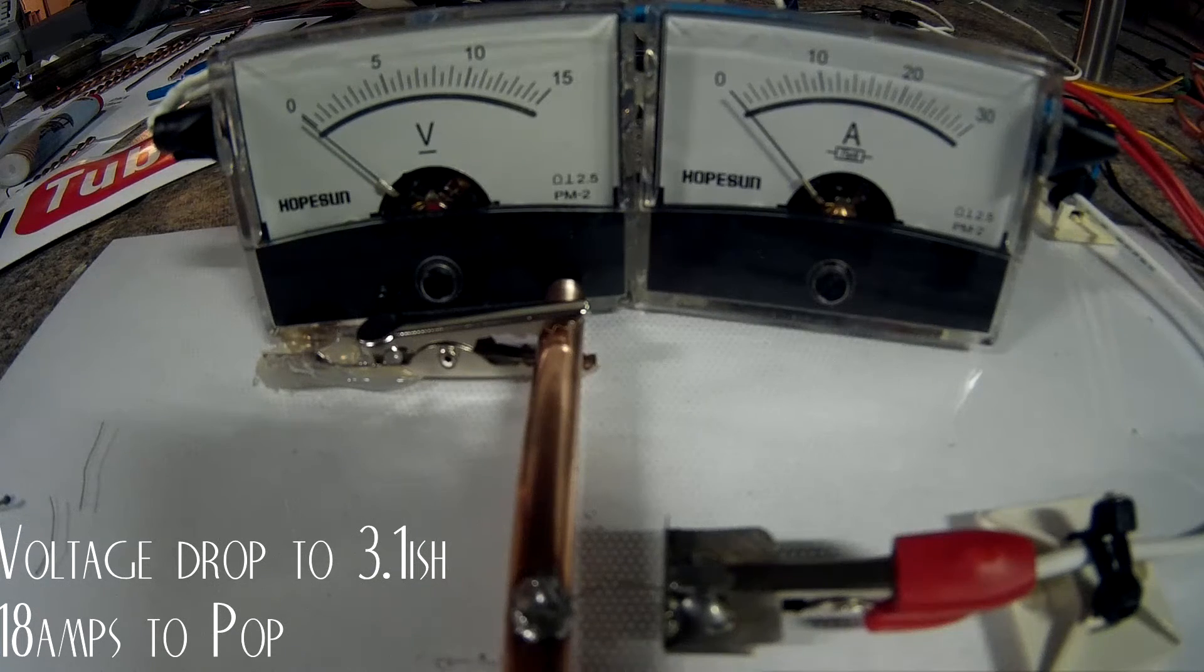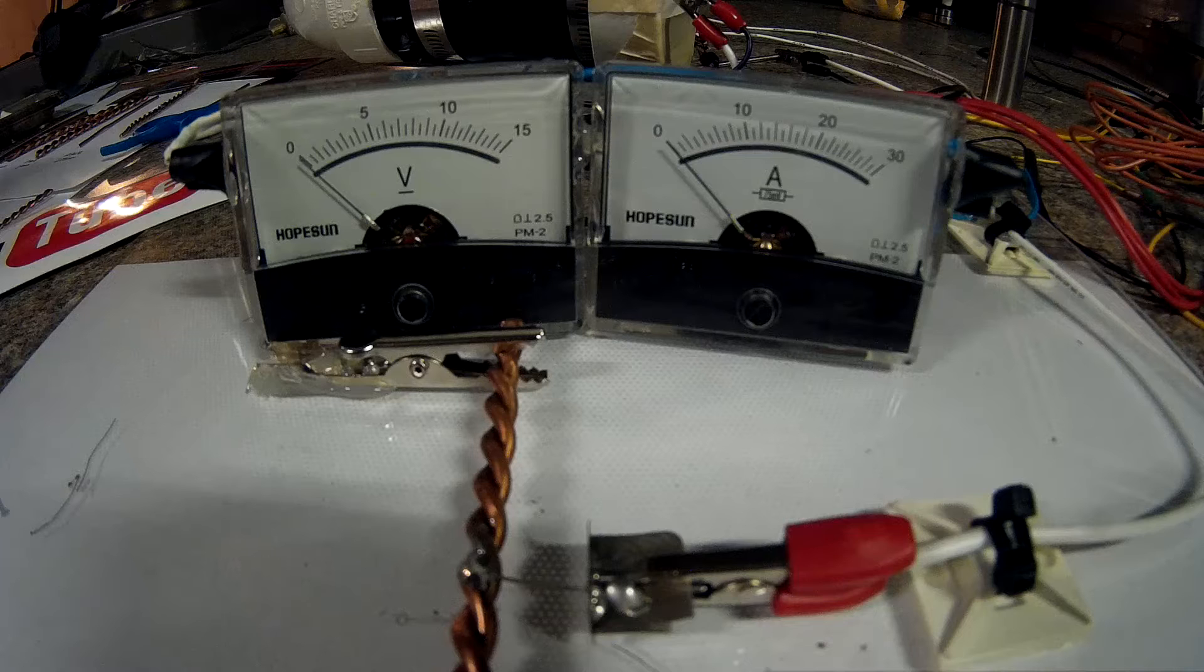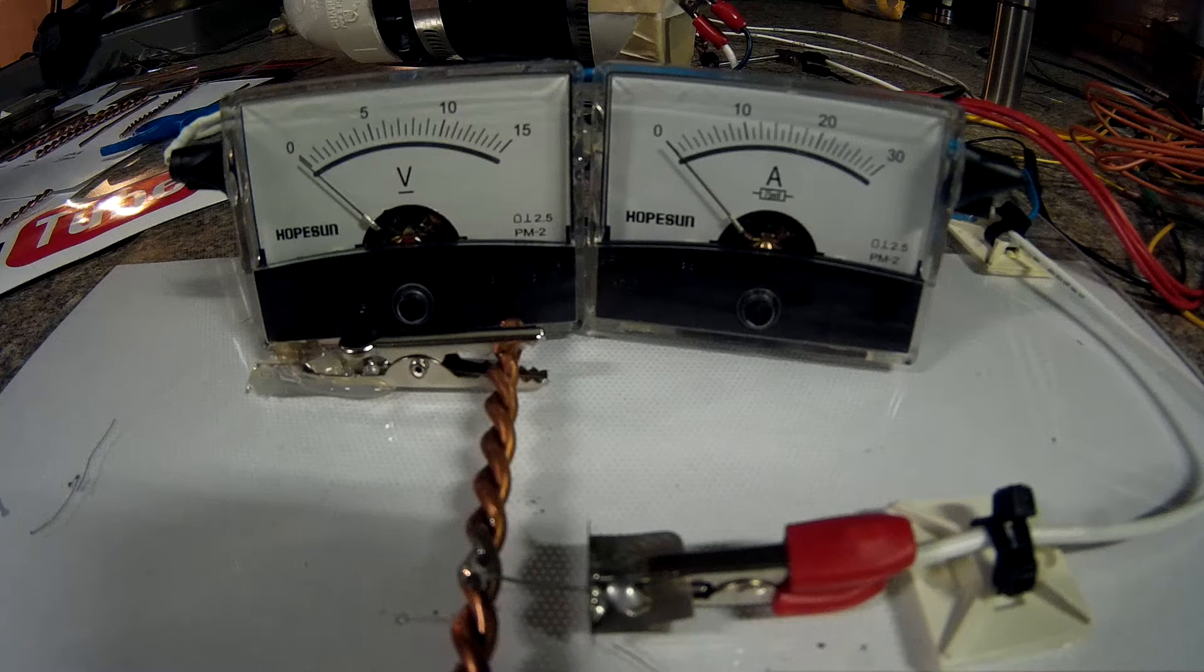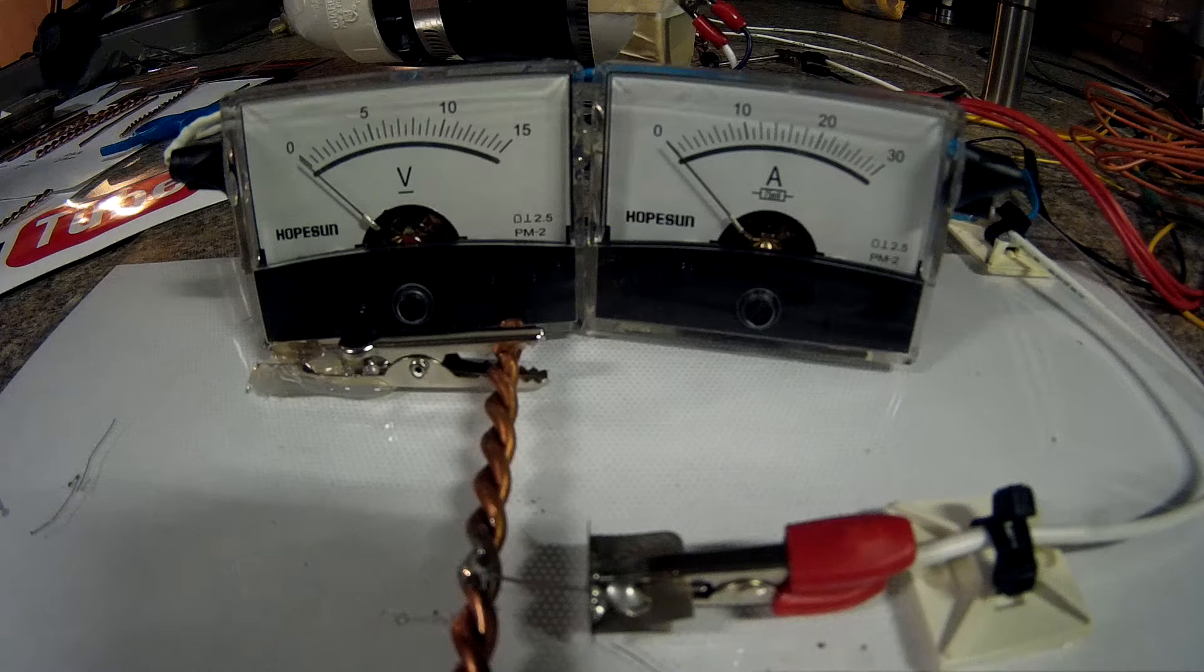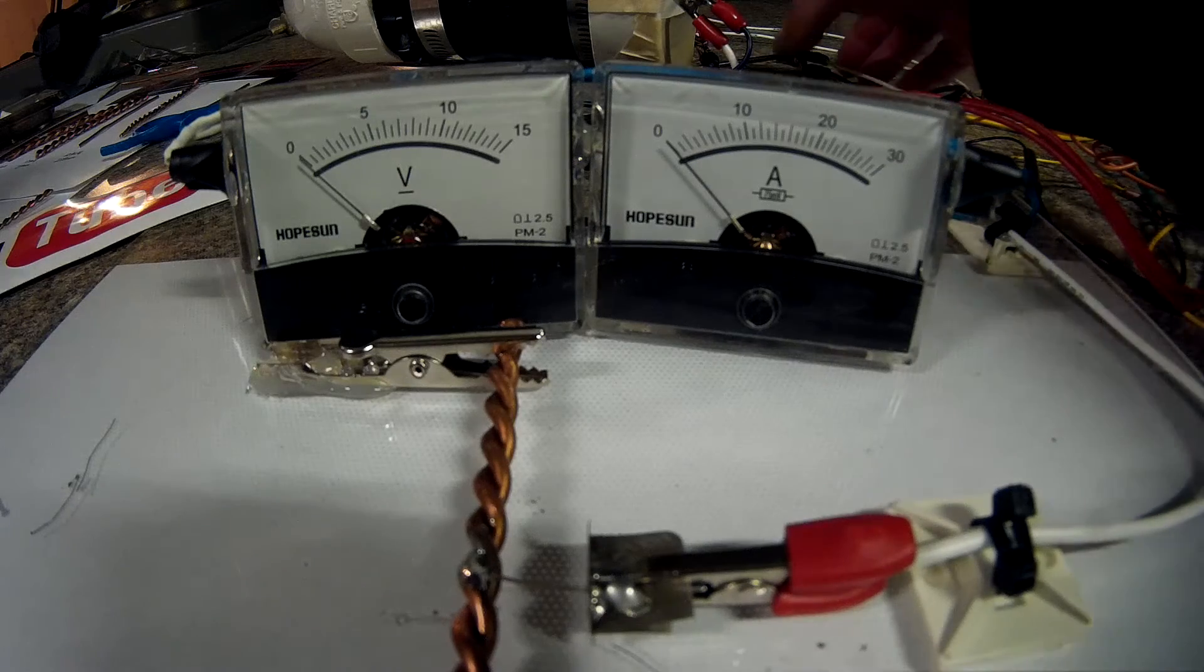Okay, I believe that one burned at 18 amps. All right, next test is the 10 gauge twisted pair with the 15 amp fuse wire. This gap is set at 10.89 millimeters and of course I don't know how long I'll be able to hold the wire up here, but we'll see. Contact.